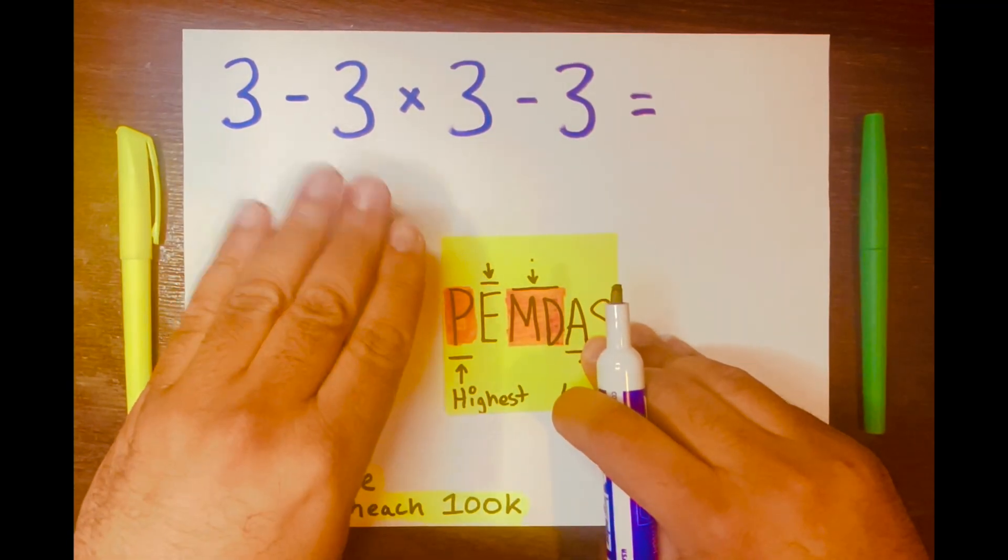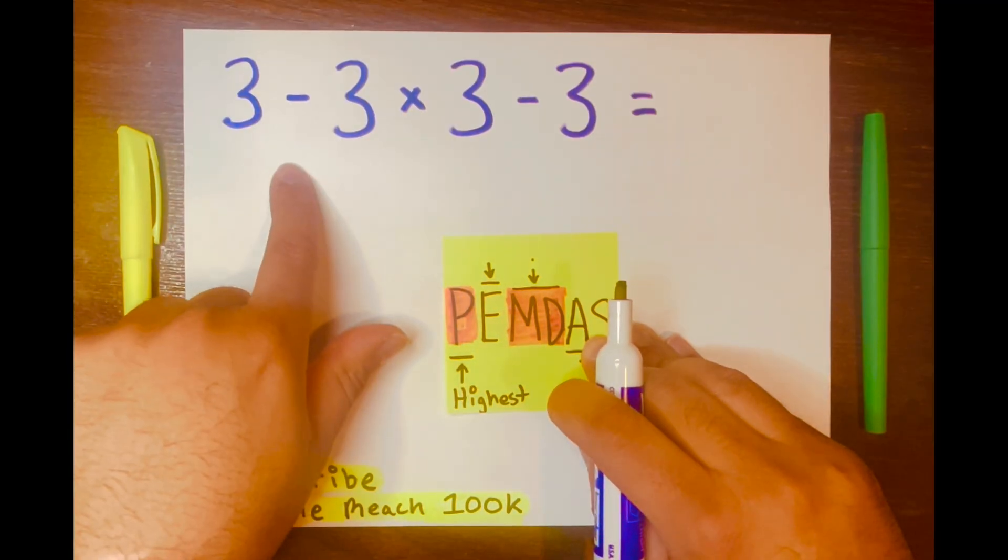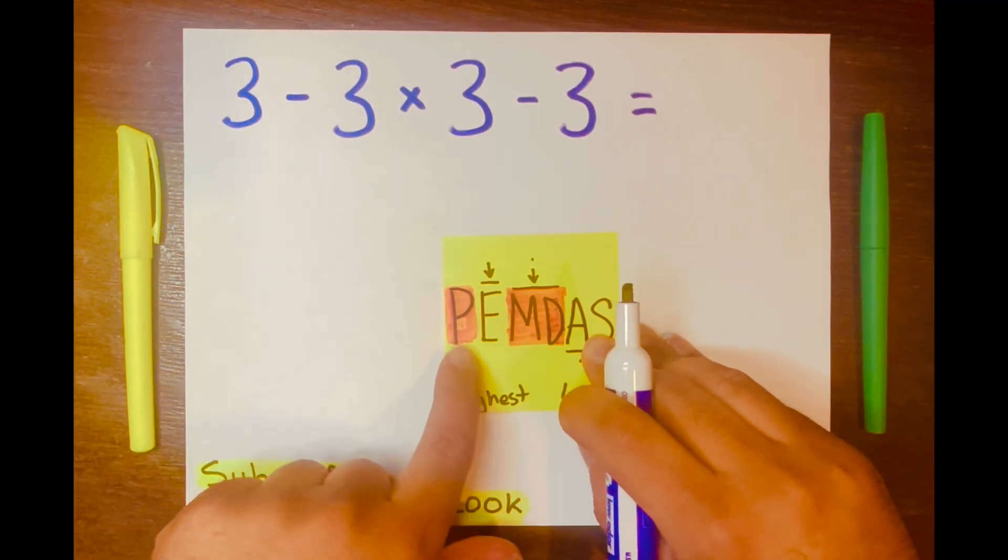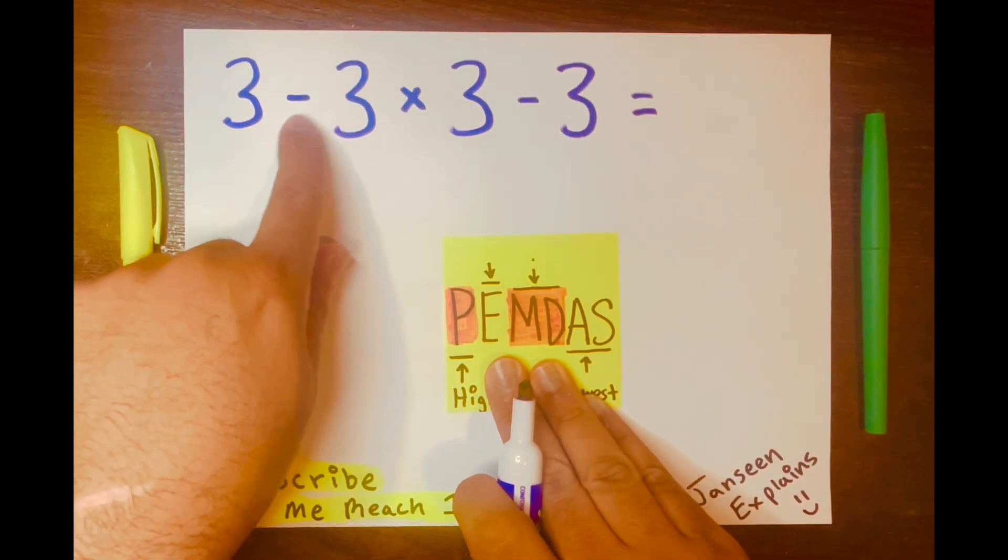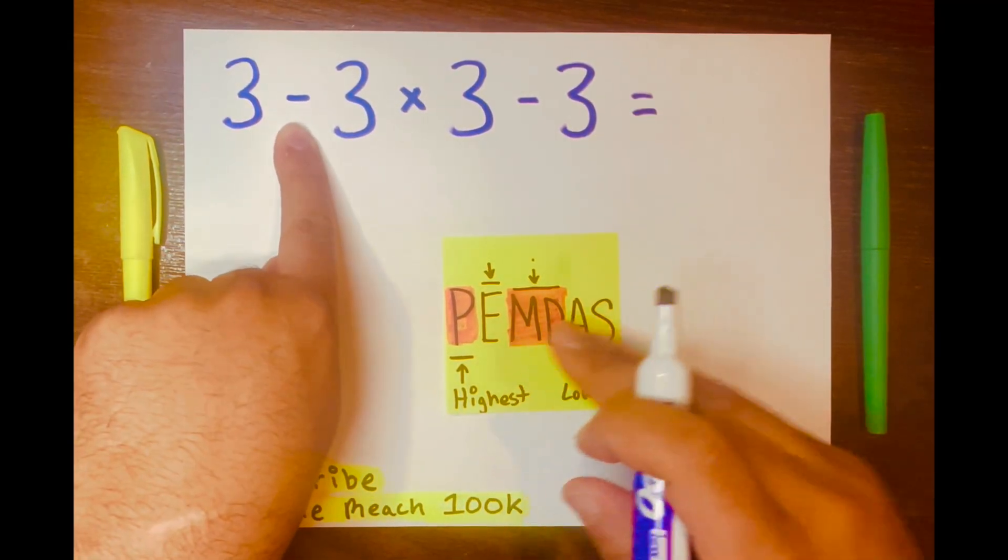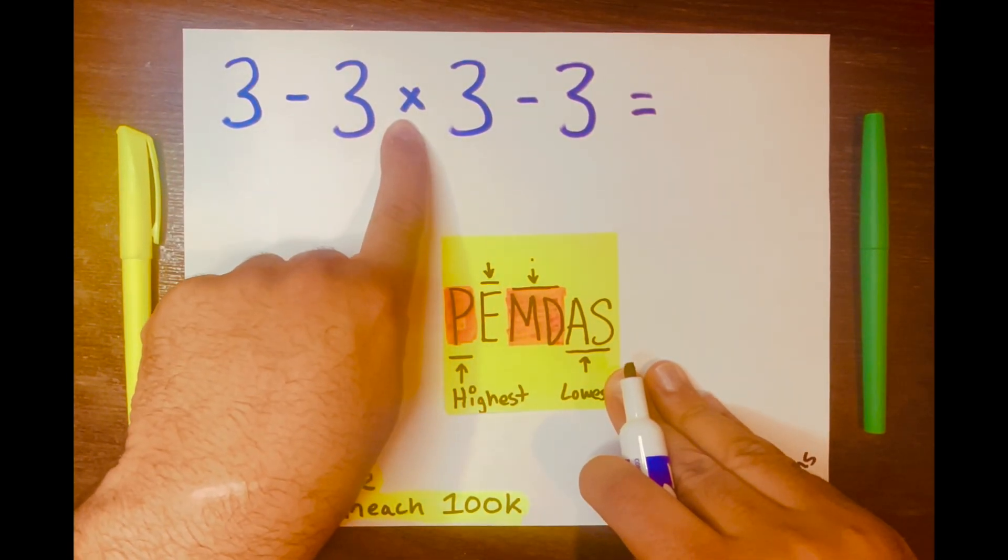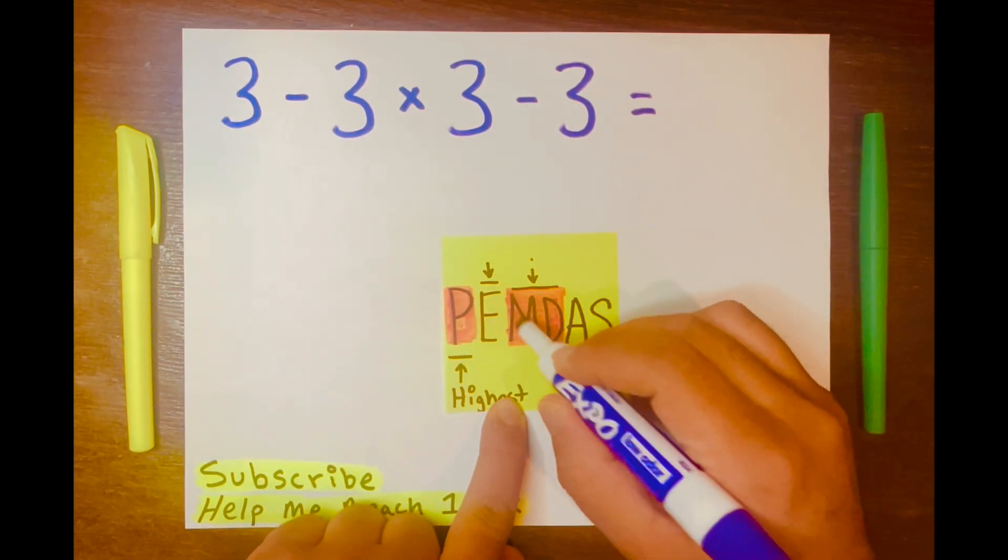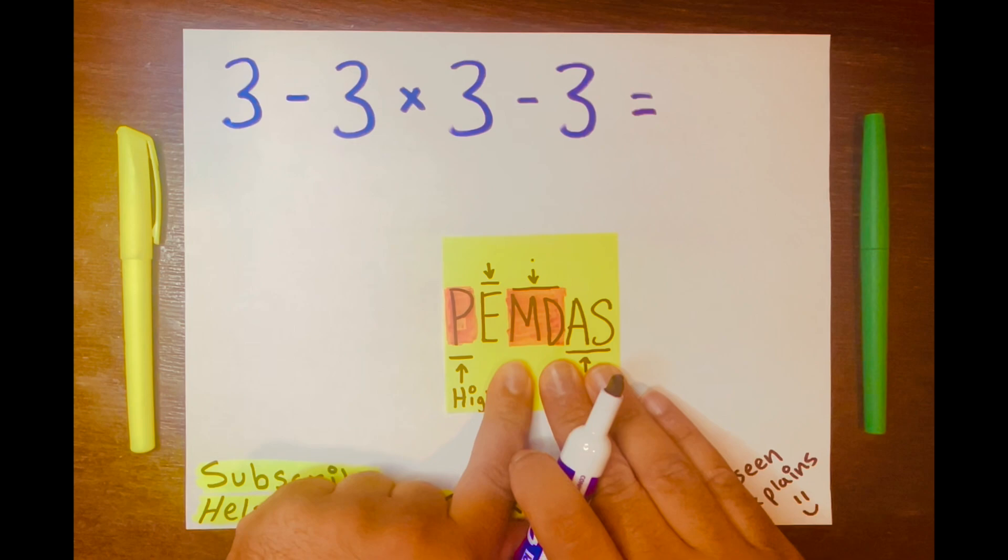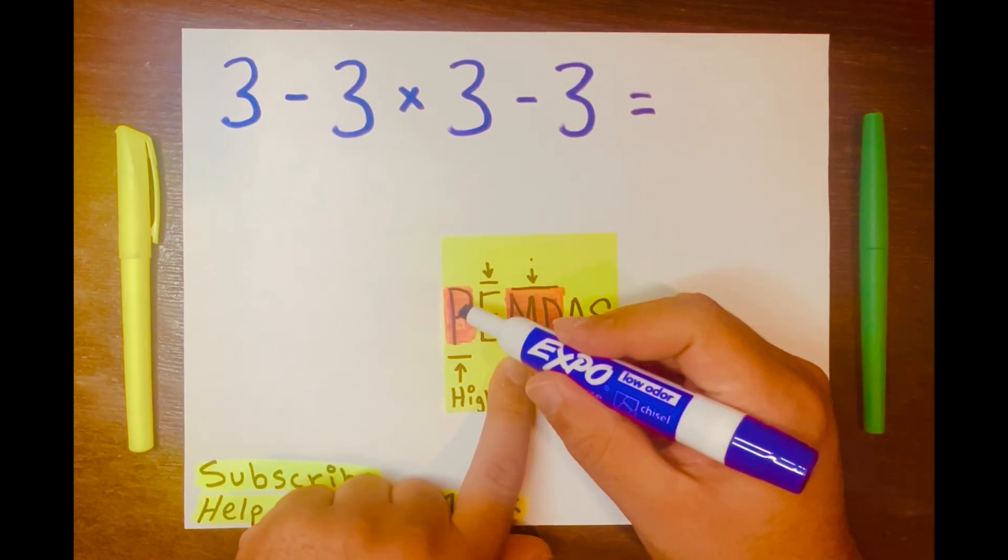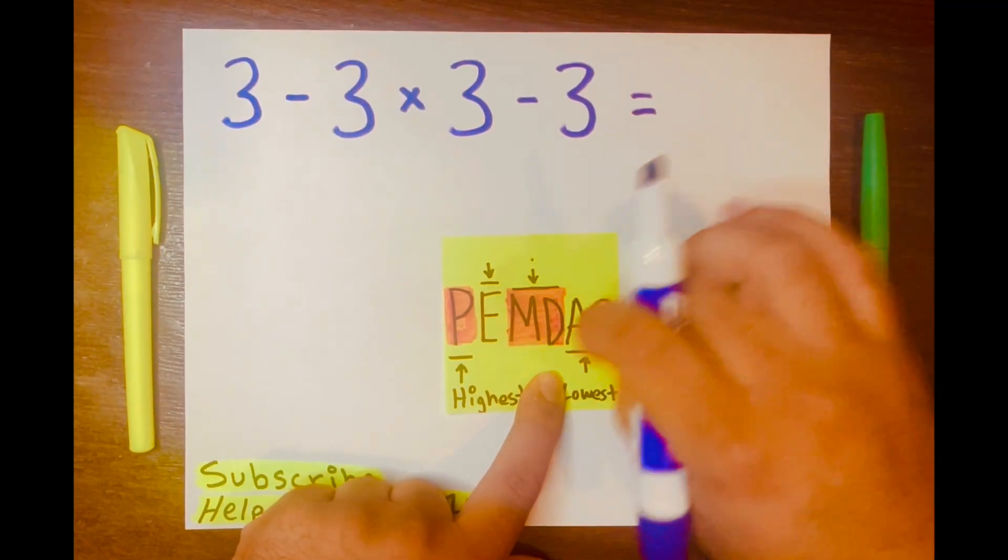When you're reading a math problem with different operations, you read from left to right according to its levels. So looking at 3 minus 3, that is subtraction at the lowest level, and looking at multiplication, it's in the higher level. So multiplication will go first. Again, P is the highest level and AS is in its lowest level.